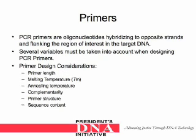PCR primers are oligonucleotides hybridizing to opposite strands and flanking the region of interest in the target DNA. Several variables must be taken into account when designing PCR primers. These are primer length, melting temperature, annealing temperature, complementarity, primer structure, and sequence content.